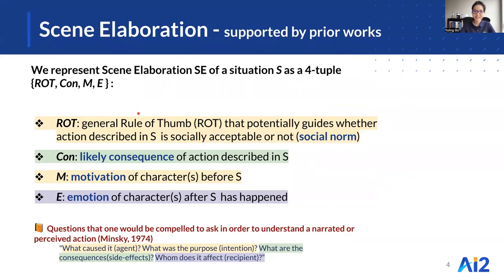We represent a scene elaboration of a situation as a four-tuple that provides details about the situation along four key dimensions. One of these dimensions is a general rule of thumb that guides whether the action described in the situation is socially acceptable — what we would think of as a social norm. These dimensions also involve the likely consequence of the action in the situation, and the motivation and emotion of characters.